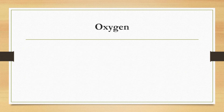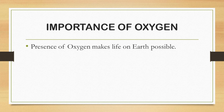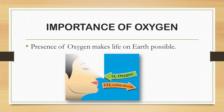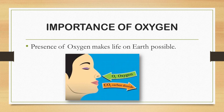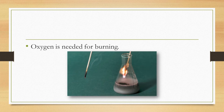Next is oxygen. Air contains 21% of oxygen. It is the most essential gas. The presence of oxygen makes life on earth possible. All living things need oxygen for breathing. And oxygen is needed for burning. Oxygen helps in burning fuels and in burning fats in the human body.